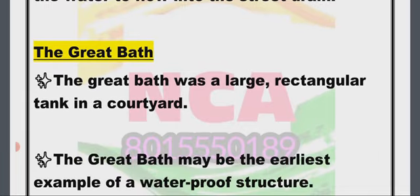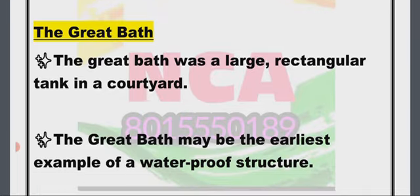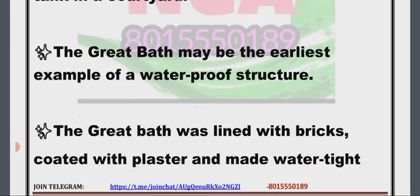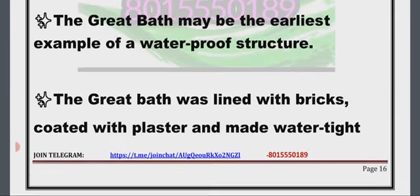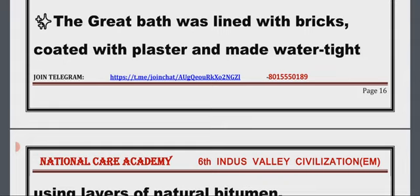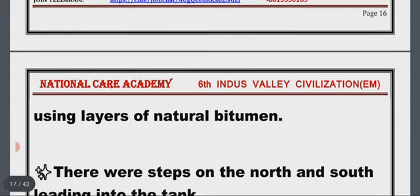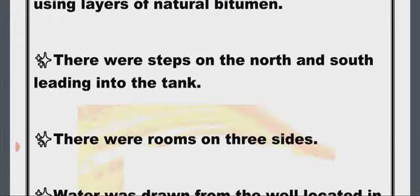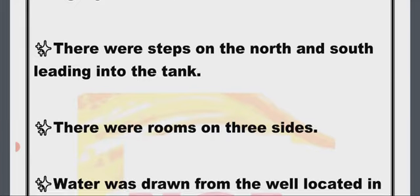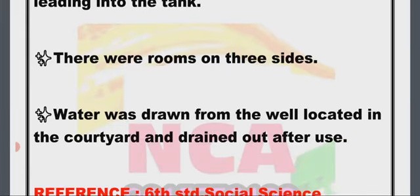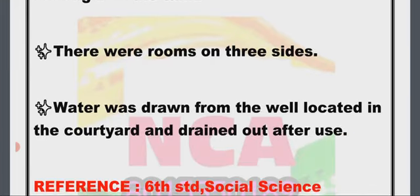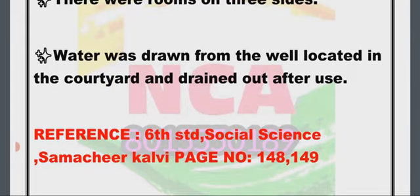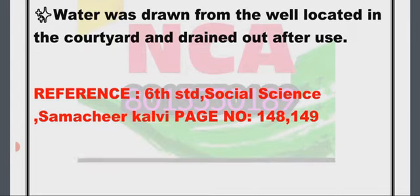The Great Bath was a large rectangular tank in the courtyard and may be the earliest example of a waterproof structure. It was lined with bricks coated with plaster and made watertight using layers of natural bitumen. There were steps on the north and south leading into the tank, and there were rooms on three sides. Water was drawn from a well located in the courtyard and drained out after use.